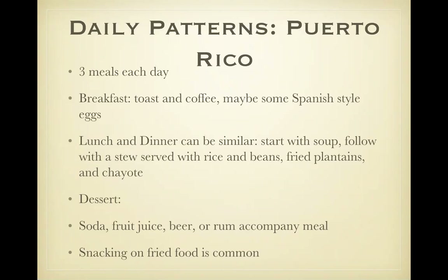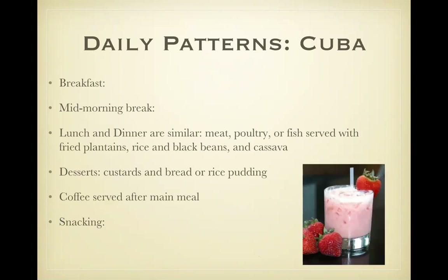Daily patterns — Puerto Rico. Puerto Ricans eat three meals a day with lunch being the largest. Dessert is often eaten daily and follows the largest meal; they often have bread pudding with rum sauce as one of their favorites. Daily patterns — Cuba. Cubans eat three meals a day; lunch again is the largest. Breakfast is usually very simple — something like toast and coffee. A mid-morning break might be more coffee with pastries. Snacks might be fruit or fruit juices. They like to drink something called batidos — a fruit juice blended with milk and ice, sometimes ice cream.